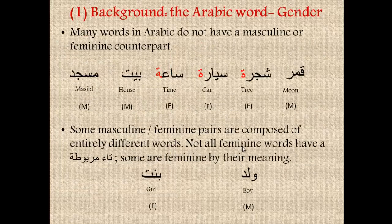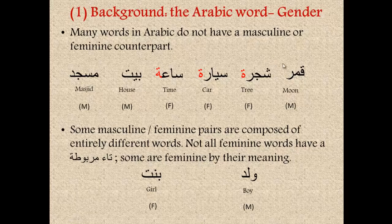Many words in Arabic do not have a masculine or feminine counterpart. Take, for example, the word qamar, which means moon — this is masculine. You might think the opposite is sun, so adding tamarbutah gives qamarah meaning sun, which is feminine. That's not the case. The word for sun is ashams, which is an entirely different word. For example, the word sa'ah, meaning time or hour, is feminine, but you can't drop the tamarbutah to get the masculine counterpart — that just doesn't exist. These words appear by themselves with a fixed gender.